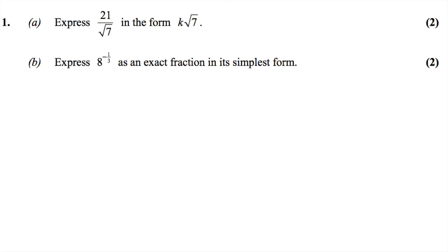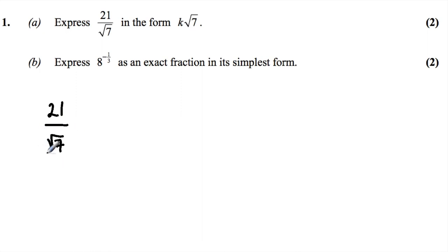The first question says express 21 over the square root of 7 in the form k times the square root of 7. To do this we need to rationalize the expression, multiplying both the denominator and numerator by the square root of 7.